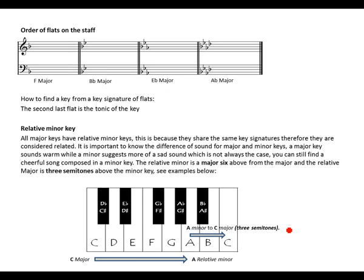Order of flats on the staff: F major has one flat — B flat. B flat major has two flats — B flat and E flat. E flat major has three flats — B flat, E flat and A flat. A flat major has four flats — B flat, E flat, A flat and D flat.